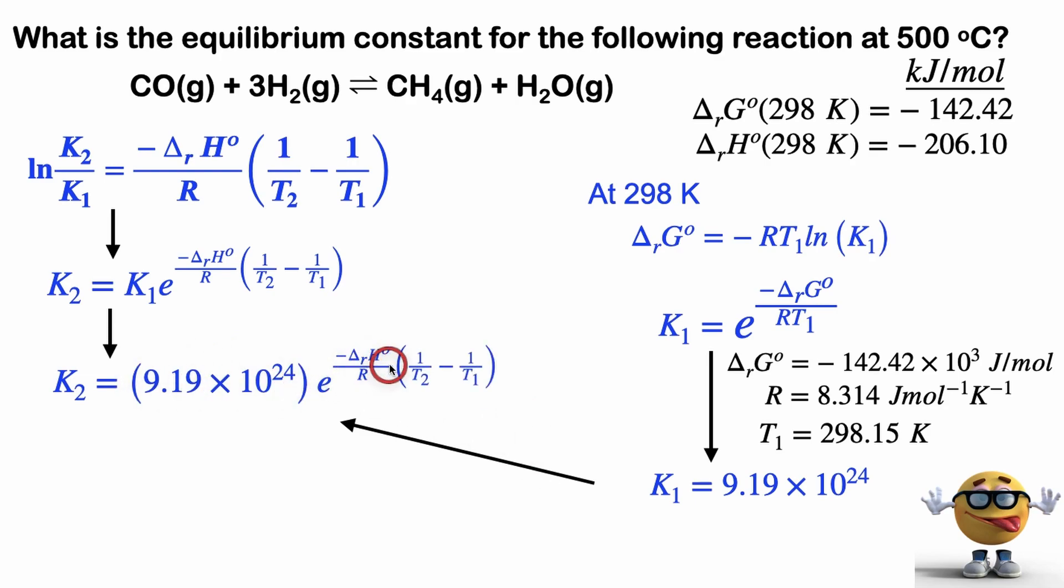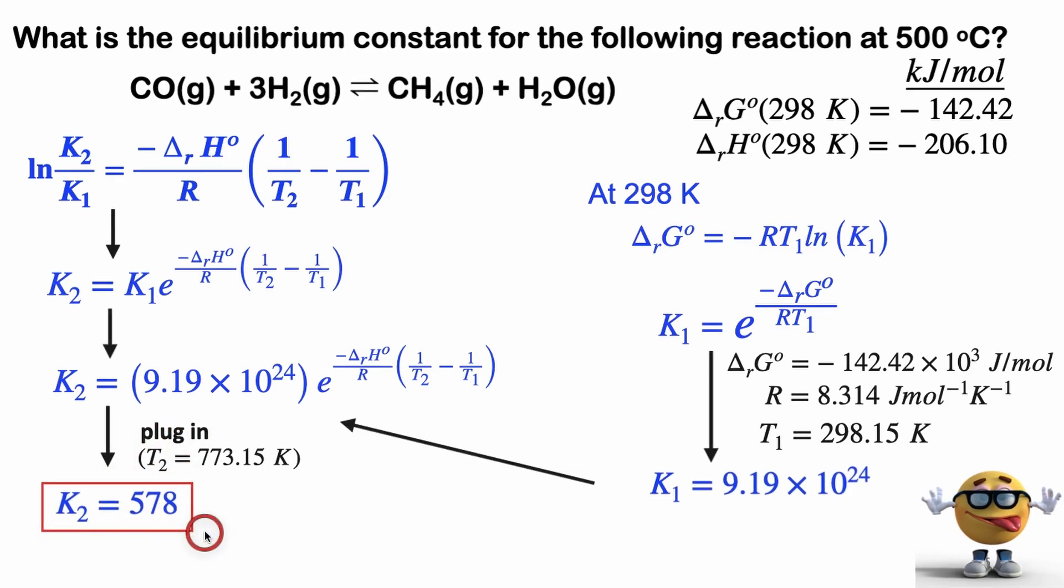And we know all these values right here. Just remember that T2 has to be in Kelvin. It's given to us in degrees Celsius, but it's got to be in Kelvin, because R is in Kelvin, so it needs to cancel that out. So yeah, anyways, if we plug all those in, we get a value of 578. So what does this mean?